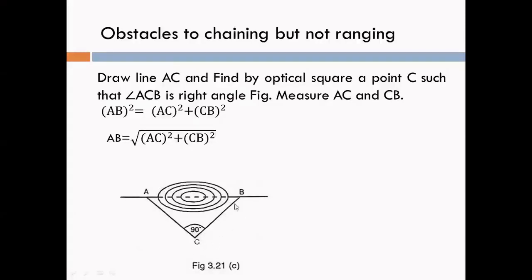The triangle ACB is a right angle triangle. Use Pythagoras law: AB² = AC² + CB². So AB = √(AC² + CB²). Measure the lengths of lines AC and CB on the ground. From the values of AC and CB, we get the length of line AB.